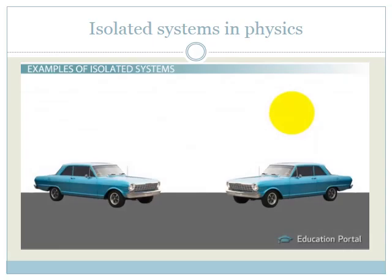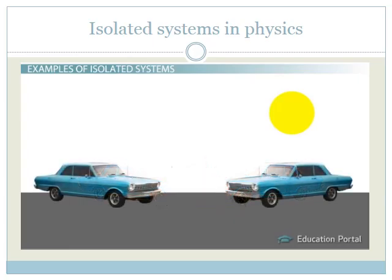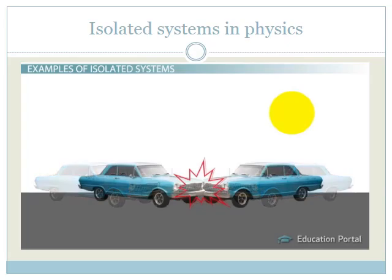For example, a head-on collision between two cars could either be an isolated system or not, depending on the forces involved. If the head-on collision is between two vehicles traveling on a road that provides a large amount of friction, the cars are not part of an isolated system because there is an external force of friction at work here. However, take friction out of the equation and the crashing cars become an isolated system.